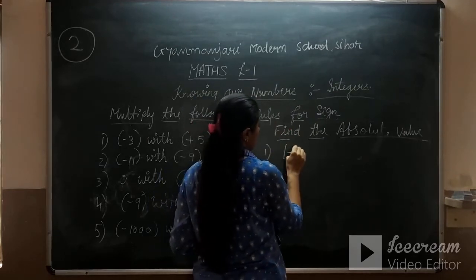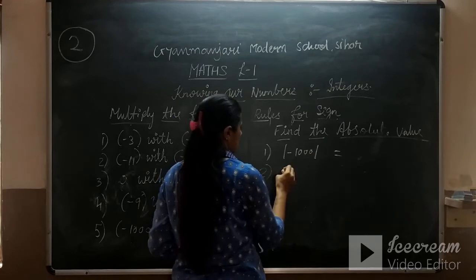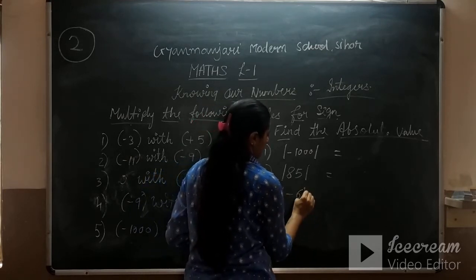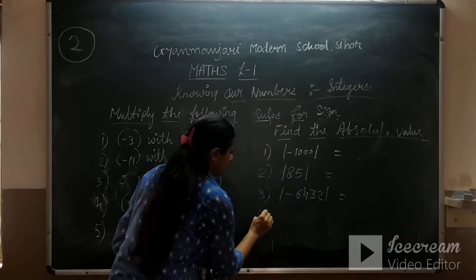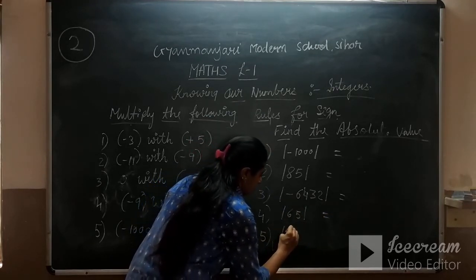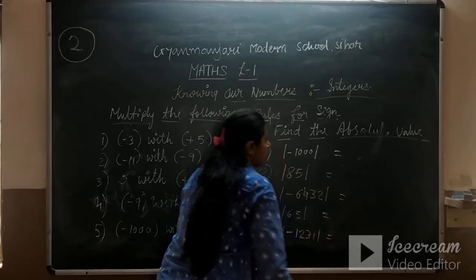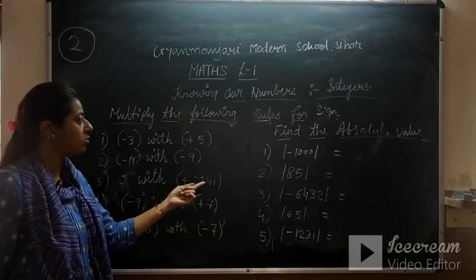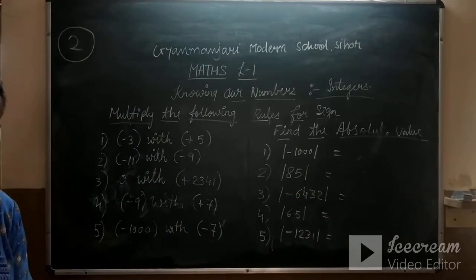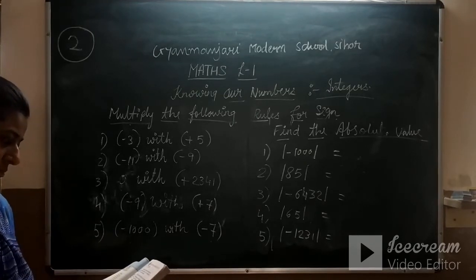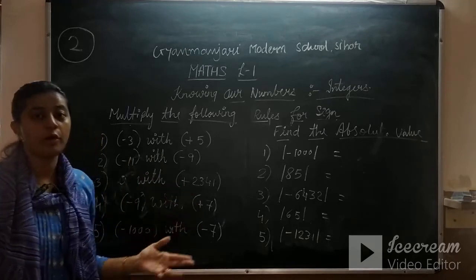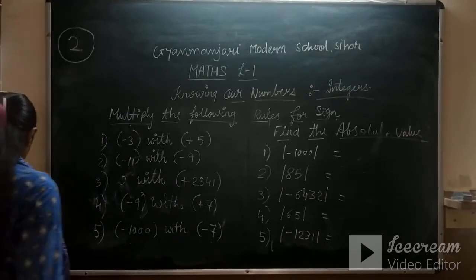One example for absolute value: absolute value of minus 1000 equals 1000. For finding out the absolute value, you have to find the absolute value of these 5 sums. Now I will teach you some sums of addition and subtraction that you have already studied in your 6th standard.